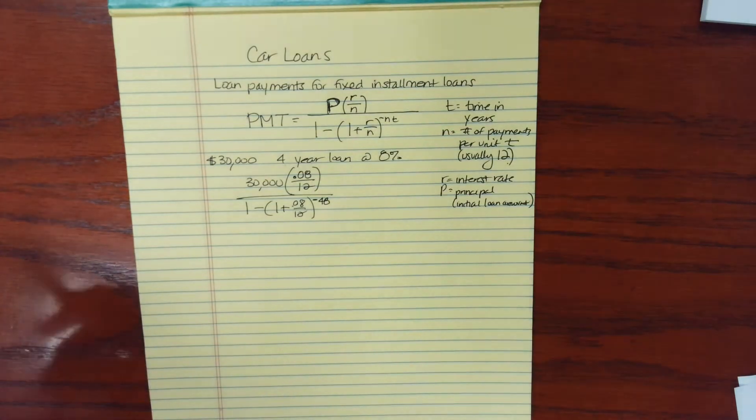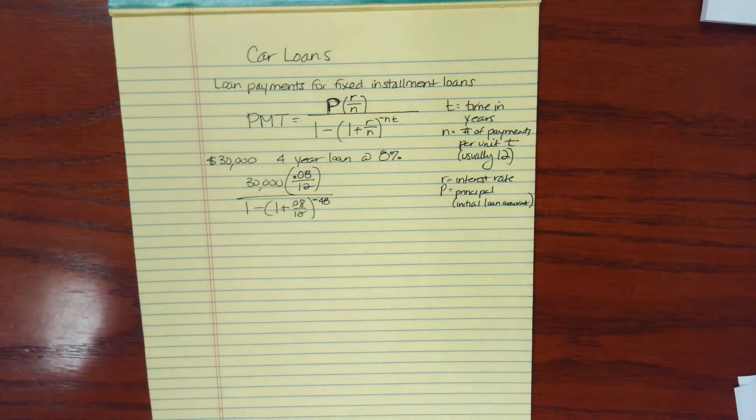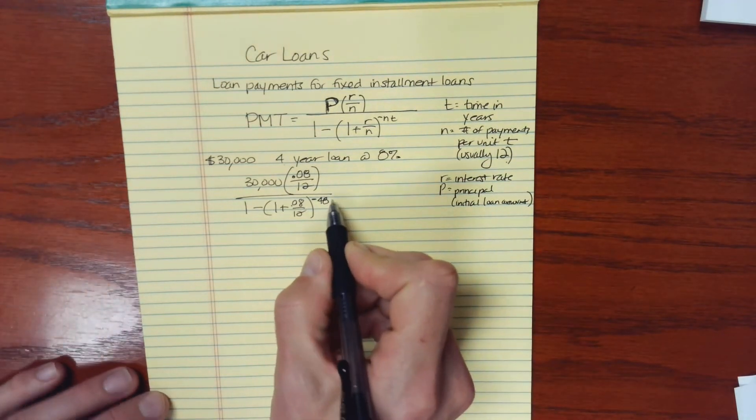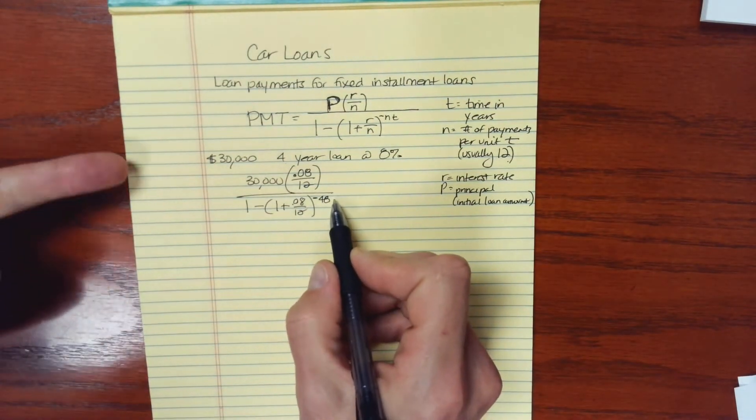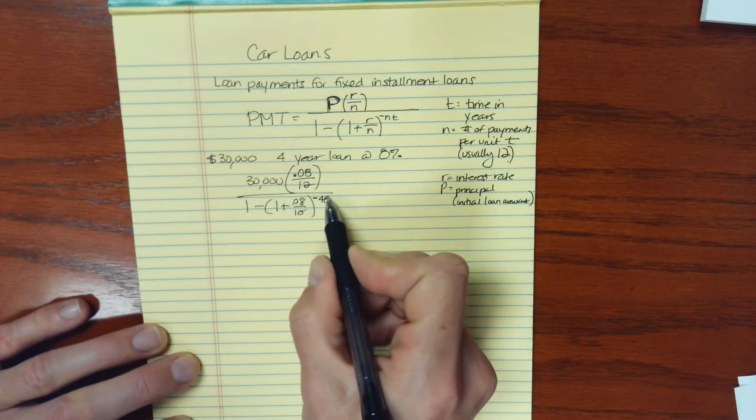Oftentimes with an auto loan, the terms are stated in terms of the number of months, the total number of months. So usually you would take out like a 36, a 48, a 60, or even a 72-month loan. And so that's the amount that we're seeing in the exponent position here.